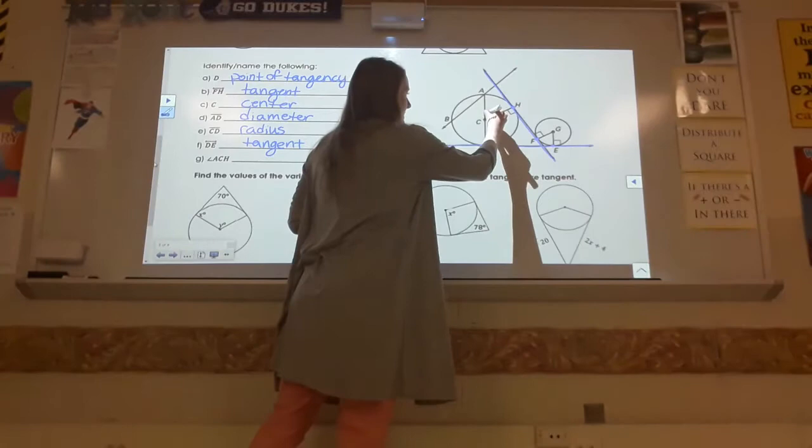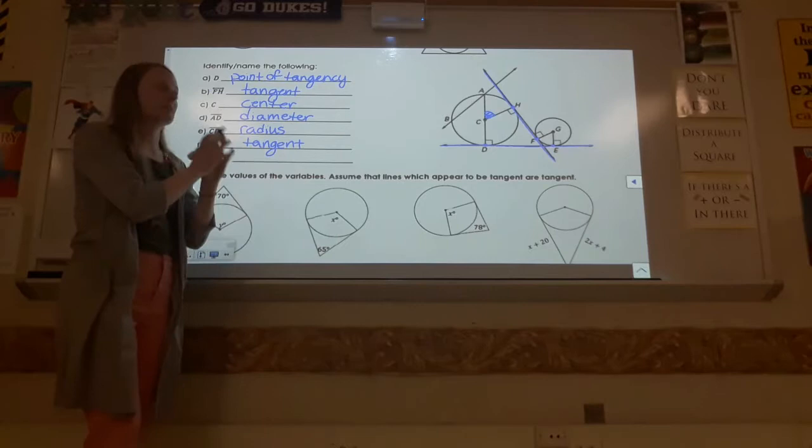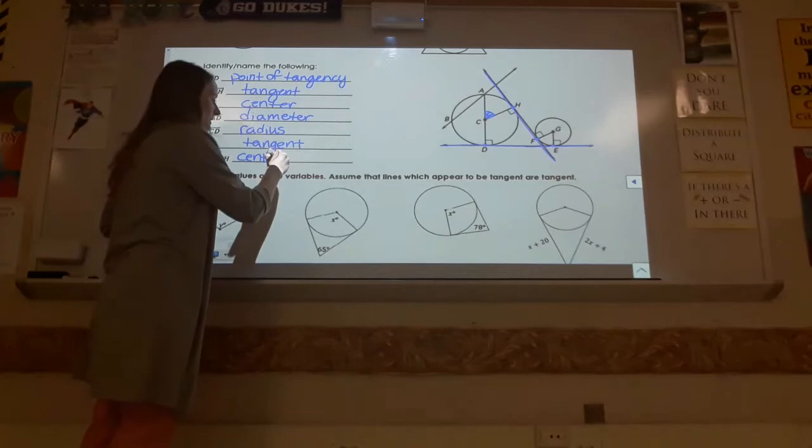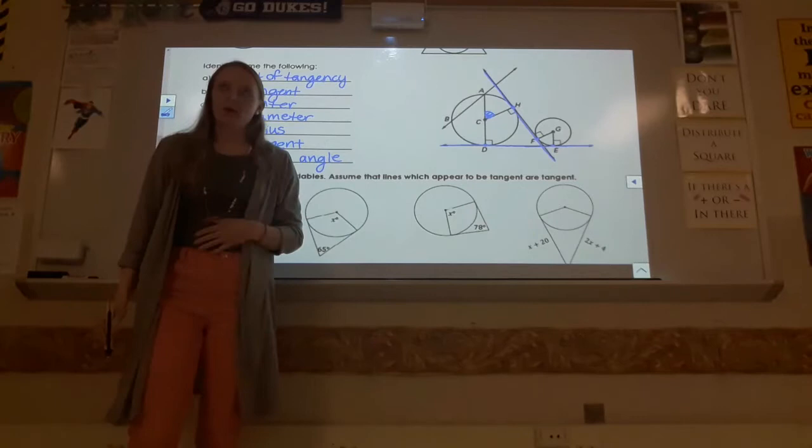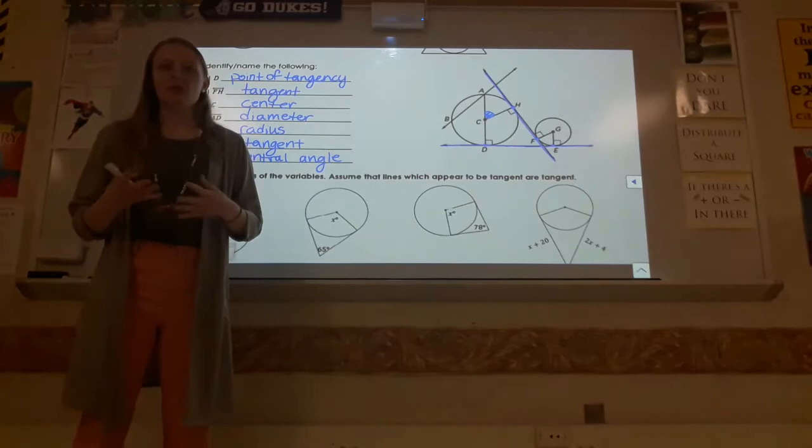And then angle ACH, right here — yes, that is an angle, but it's not just any old angle. It has a special name in this context. The fact that it's inside of the circle and the vertex is at the center makes it a central angle. So you need to make sure you're using your academic language, understanding when each of these objects are specific to these contexts with circles, so you know when I refer to something as a central angle or a tangent.